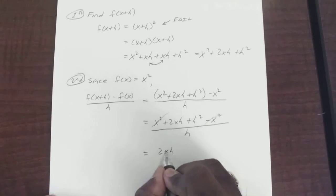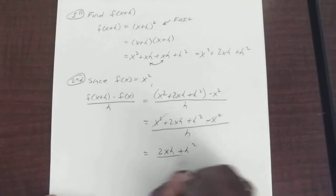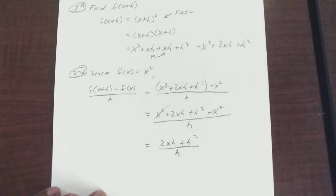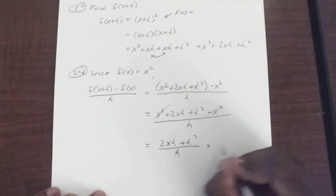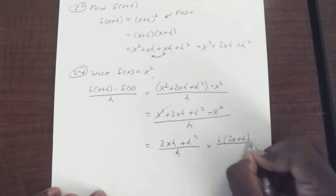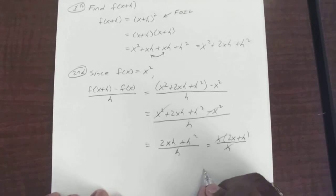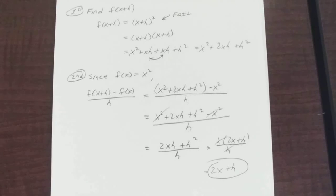Okay, so you have 2x times h plus h squared over h. We're going to cancel the h. Yep, now you factor out an h. So you have 2x plus h all over h, where these two cancel out. So you're left with 2x plus h as your difference quotient.